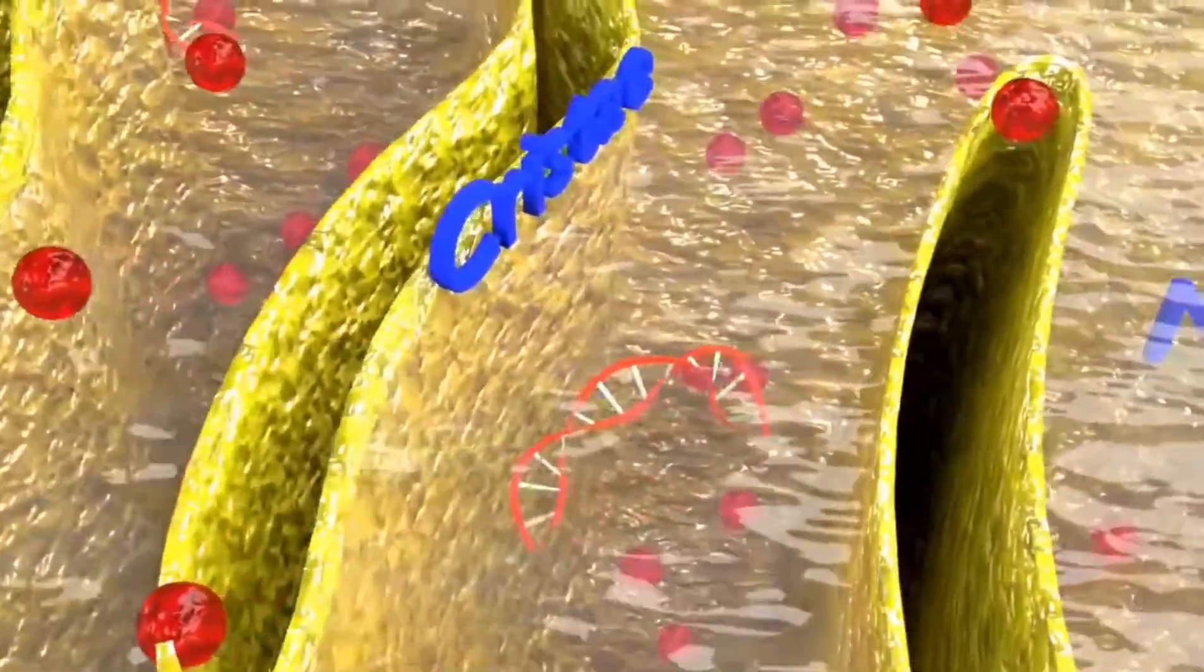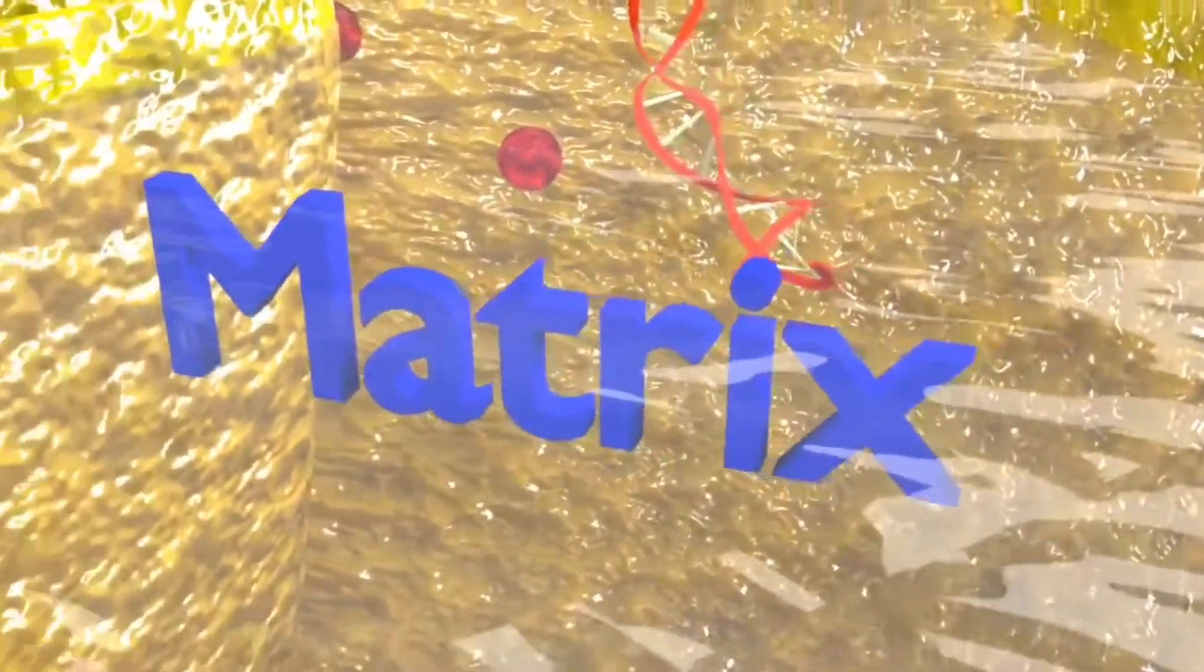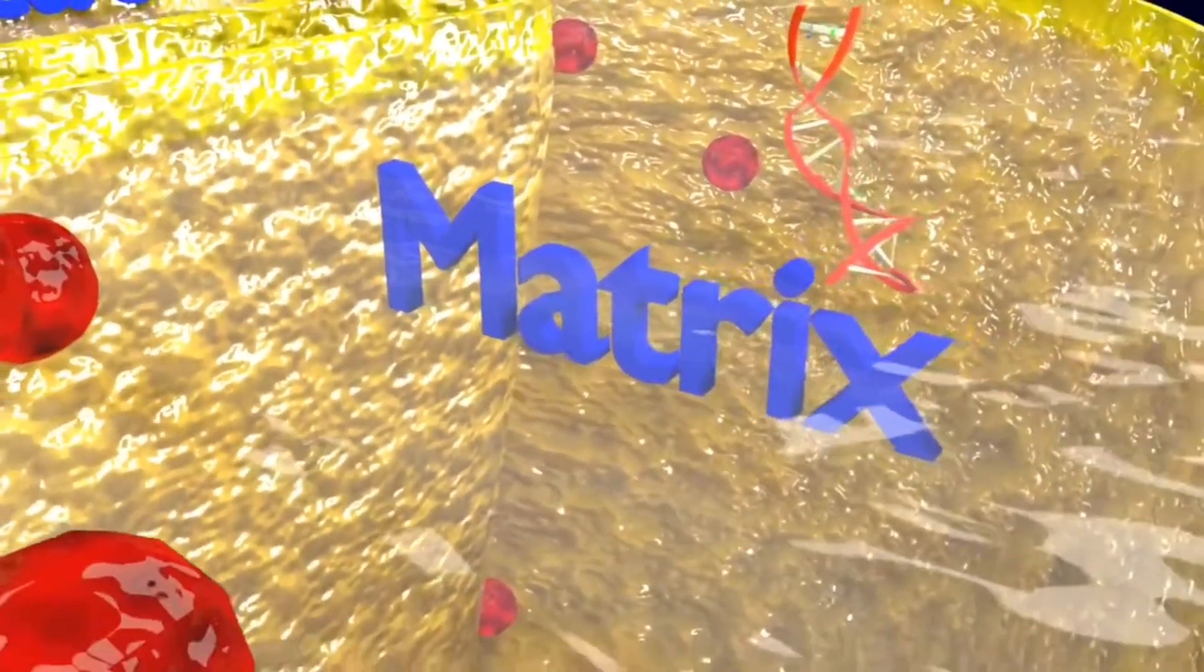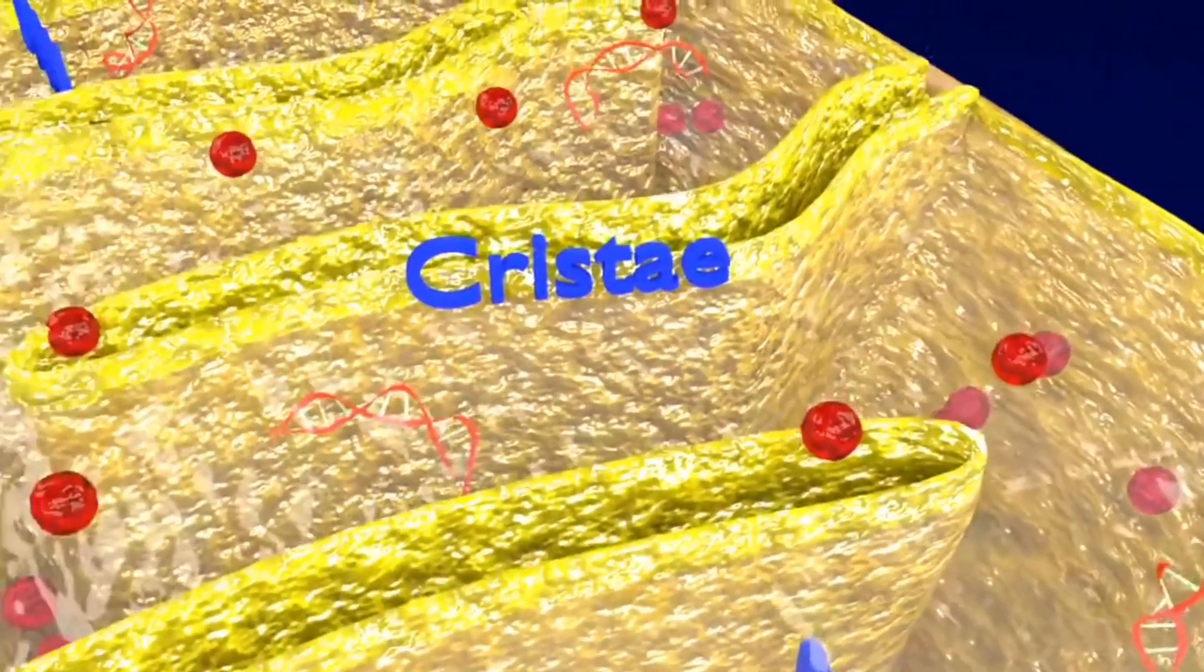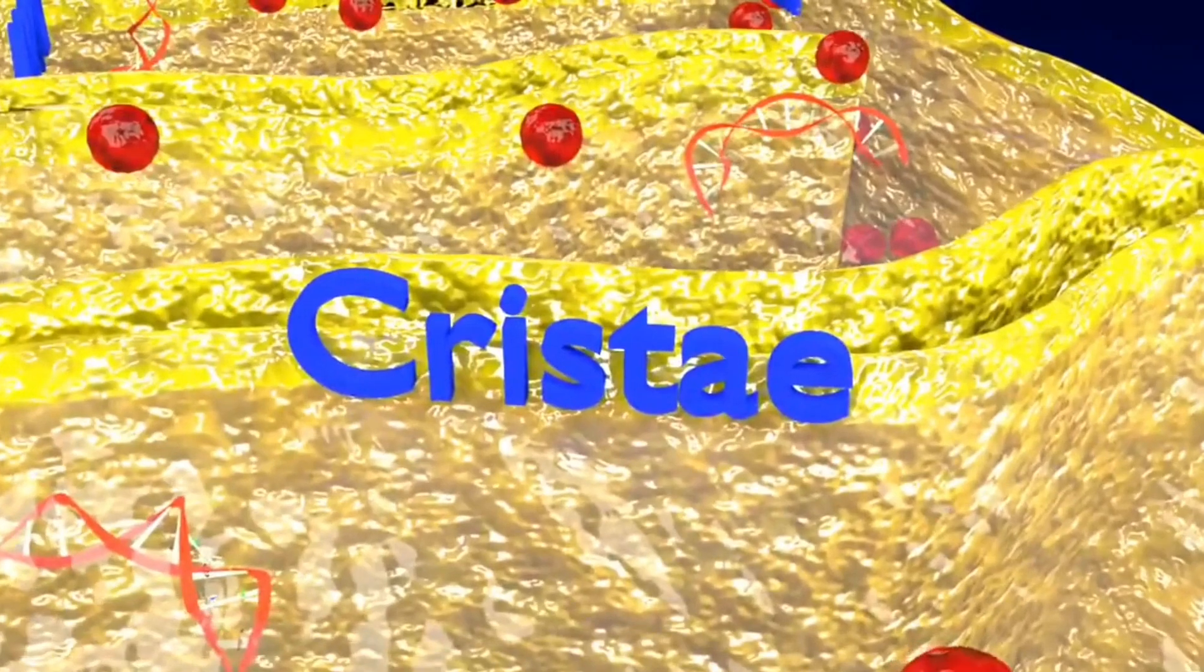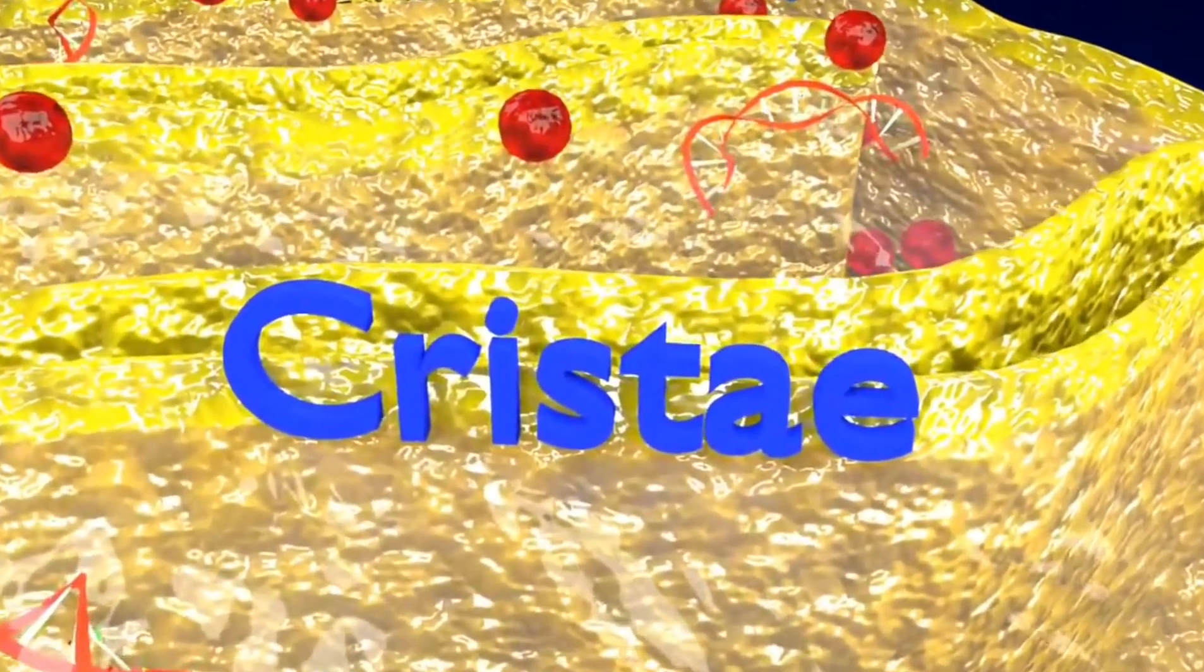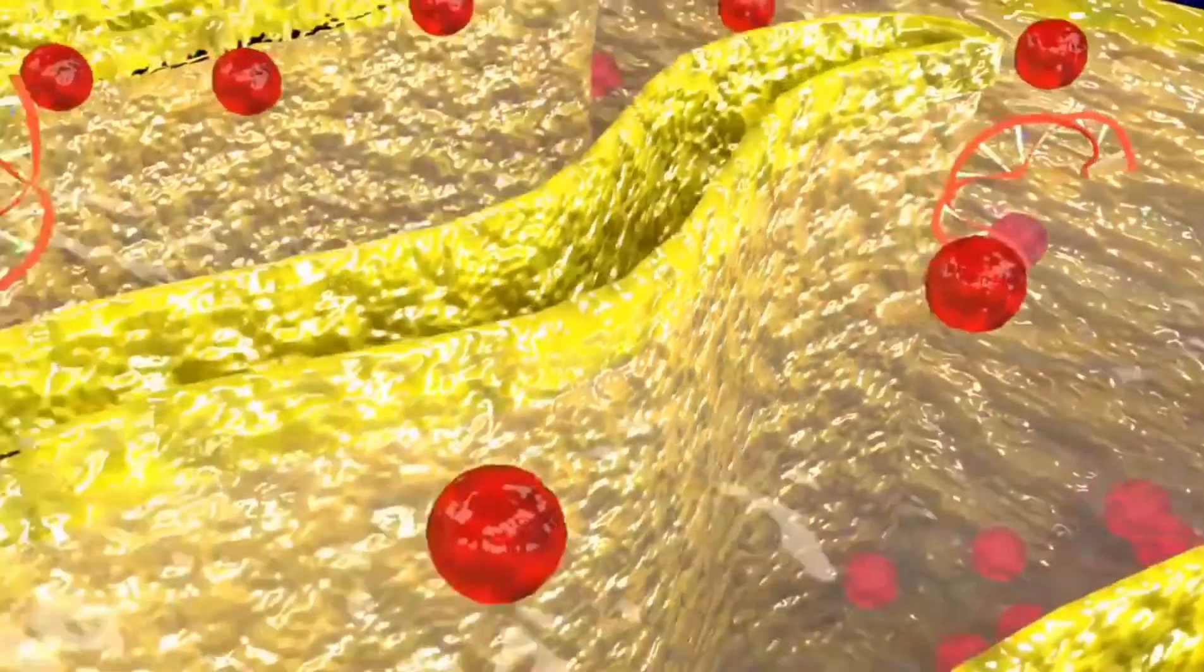The space within the inner membrane of the mitochondrion is known as the matrix. The inner membrane is arranged into cristae in order to increase the surface area available for energy production via oxidative phosphorylation.